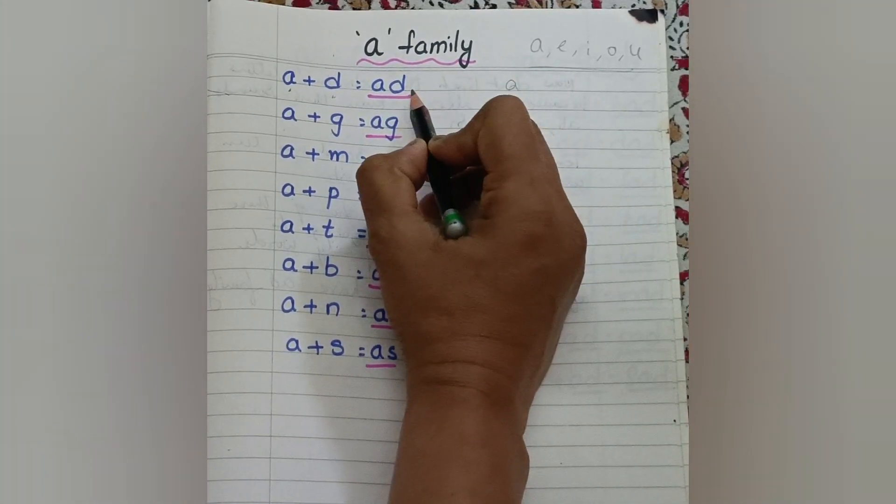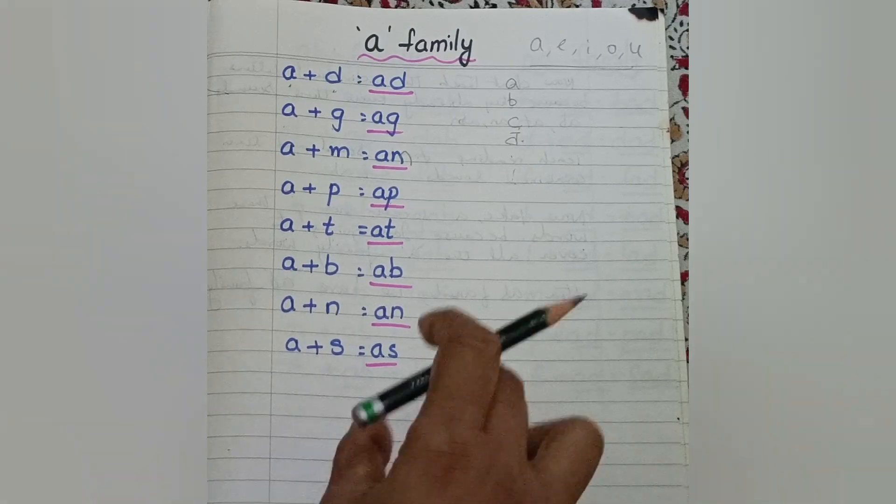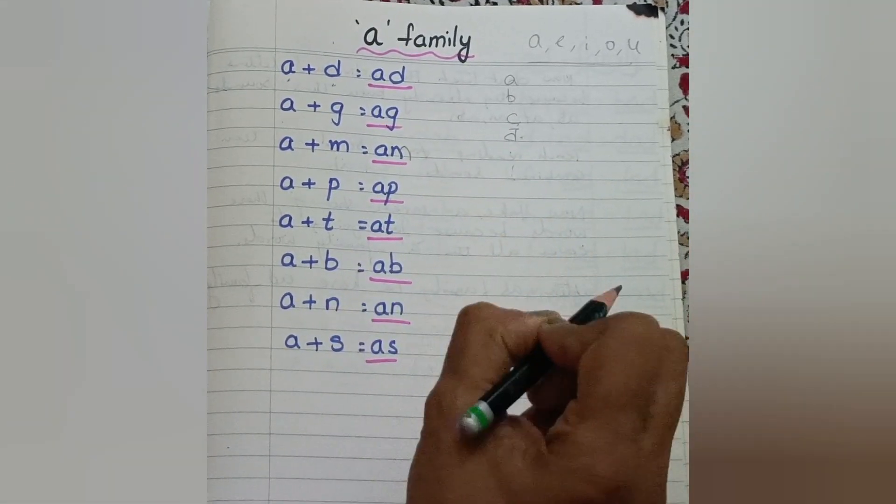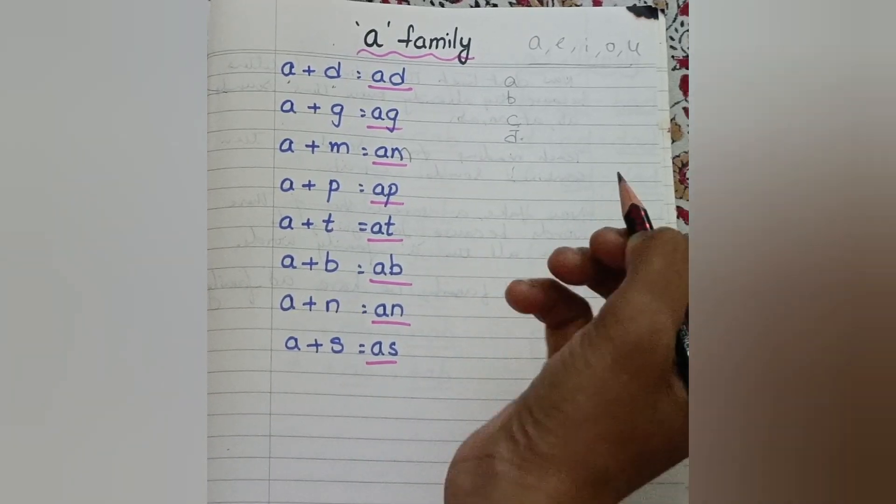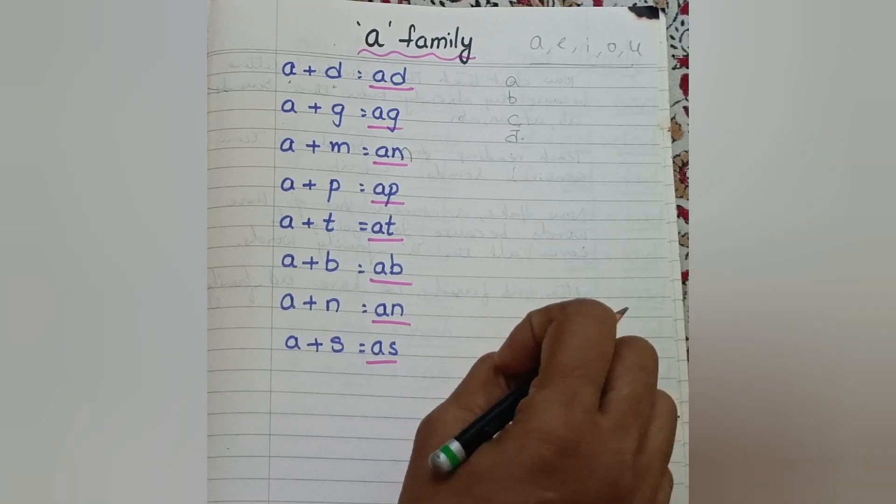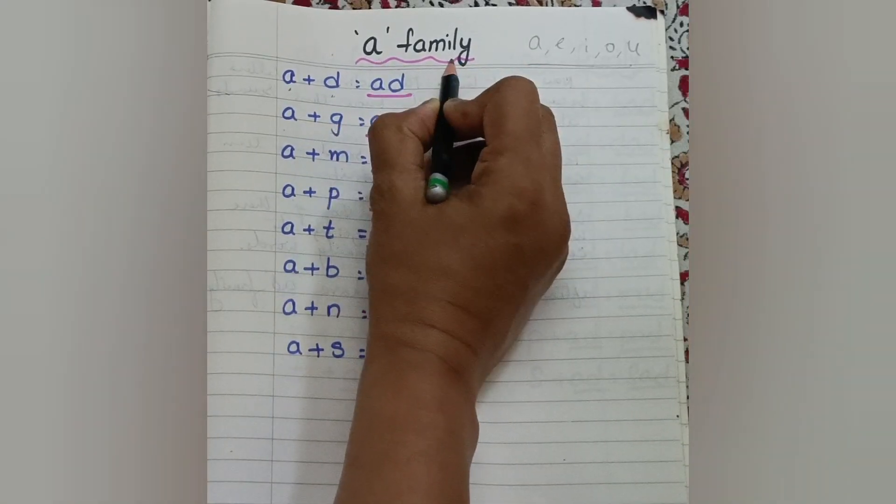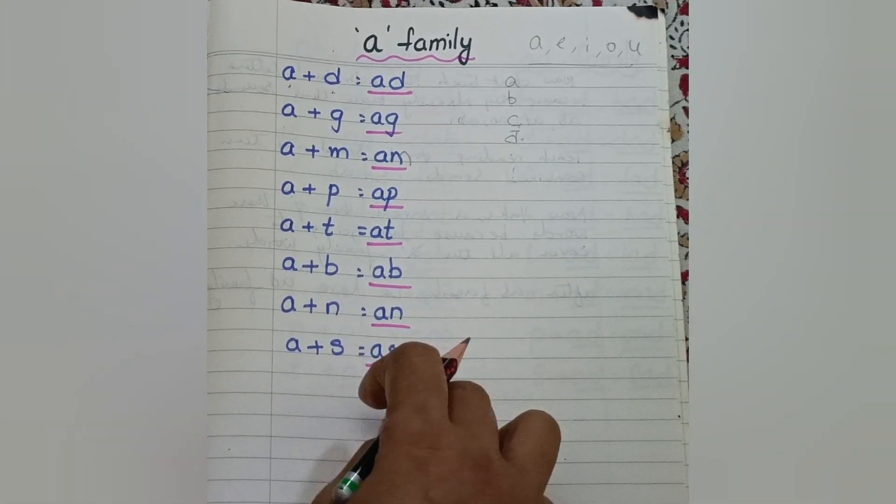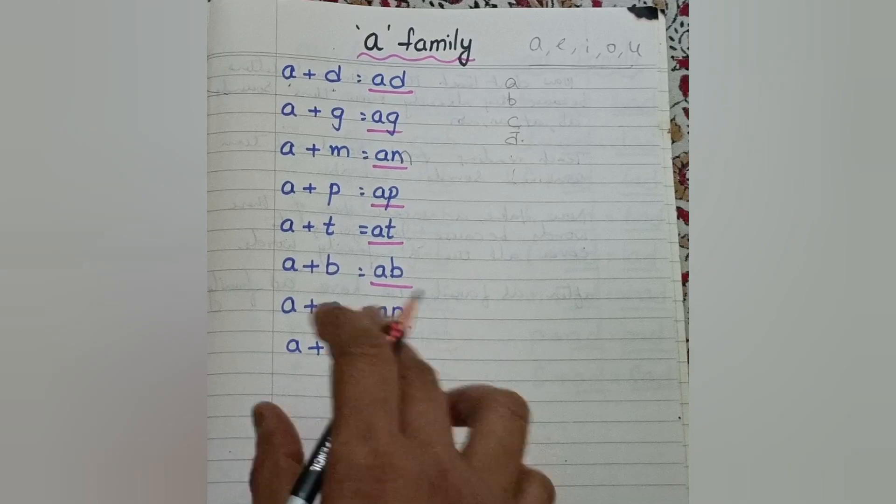Then you have to teach two-letter blending. After they're perfect with two-letter blending, then you have to teach three letters. So for this there's no fixed age group when we have to teach or when the child will read. Even a three-year-old child can also read the words if he is familiar with the letter sounds. In today's video we're going to learn A family words.